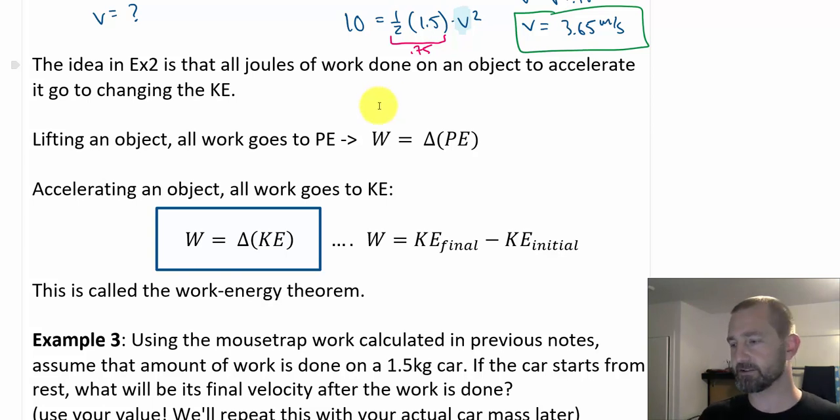Any sort of work we do lifting an object would change potential energy, so we could say work done equals change of potential energy if lifted straight up in the air. But if something's just accelerating, we can say the work goes into changing kinetic energy: work equals delta KE. The kinetic energy change would be the final minus the initial, the new minus the old, so kinetic energy final minus kinetic energy initial should be equivalent to the work done. The mechanism of energy transfer, the work being done, is going to alter how much kinetic energy the object has. This is called the work-energy theorem for kinetic energy.